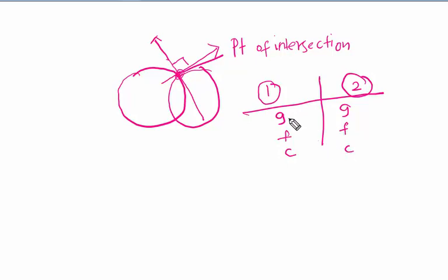So, for the first circle, I will call it as G1, F1, C1. For the second circle, G2, F2, C2.